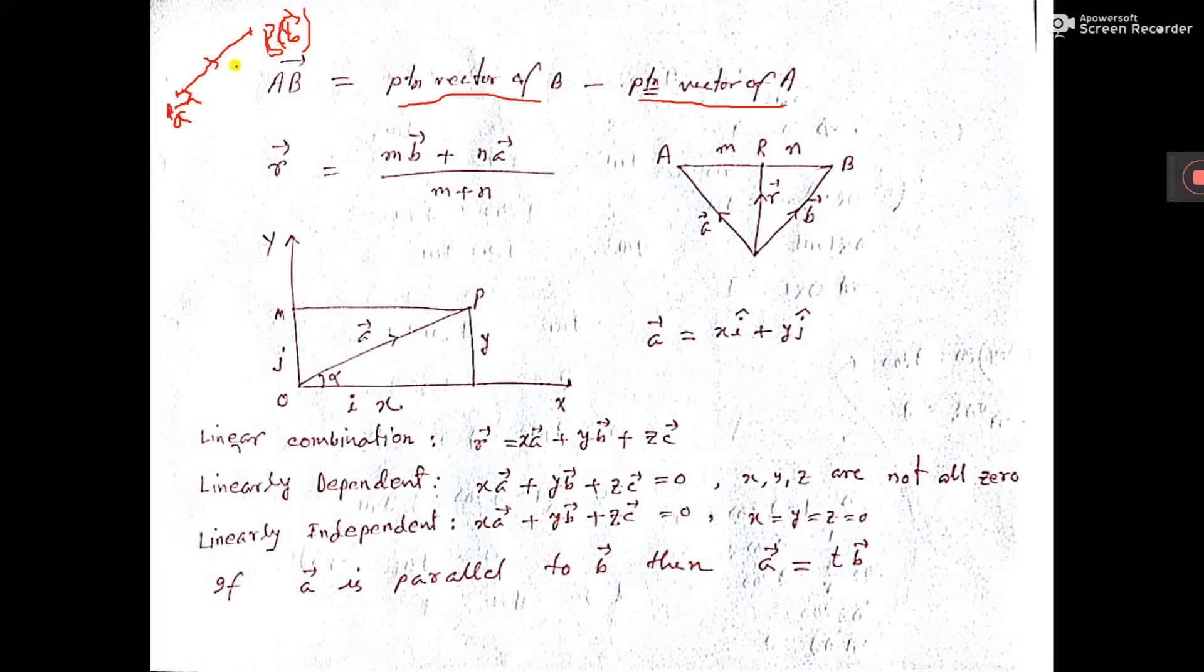So, position vector A and B is given. Then, A B will be B vector minus A vector, small b vector minus small a vector.